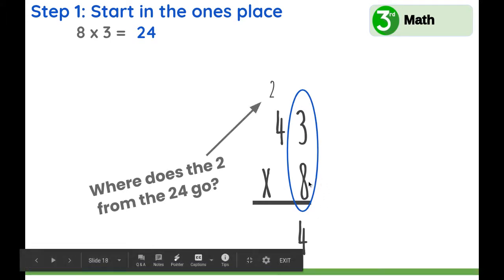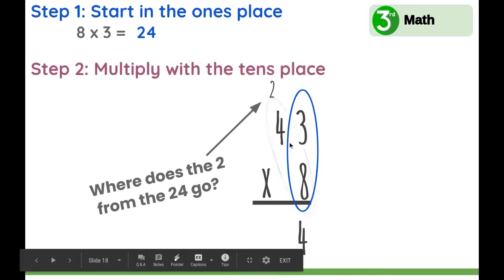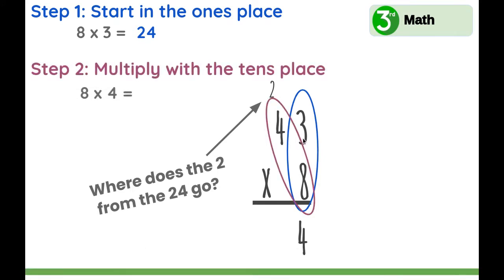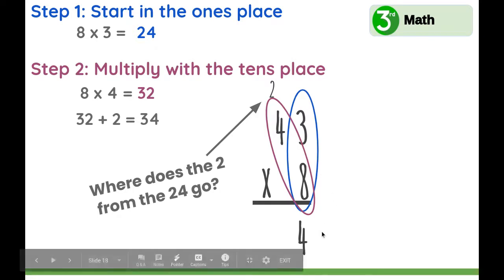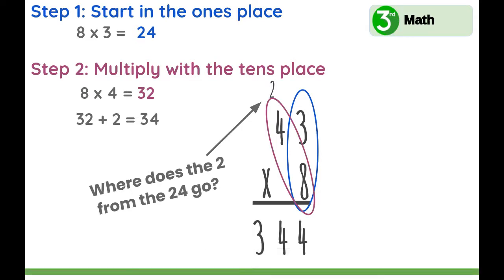Next, we'll multiply 8 times 4. What is 8 times 4? 32, yes. Then remember, we're going to add the number we carried: 32 plus 2 equals 34. We're going to write 34. 43 times 8 equals 344.